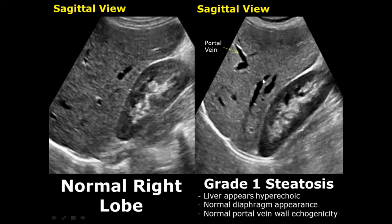Now we move on to fatty liver, or hepatic steatosis, starting with grade one — the mildest form. The liver will appear hyperechoic, more hyperechoic compared to the kidney, but we can see the diaphragm normally and we can also see the hyperechoic walls of the portal vein.